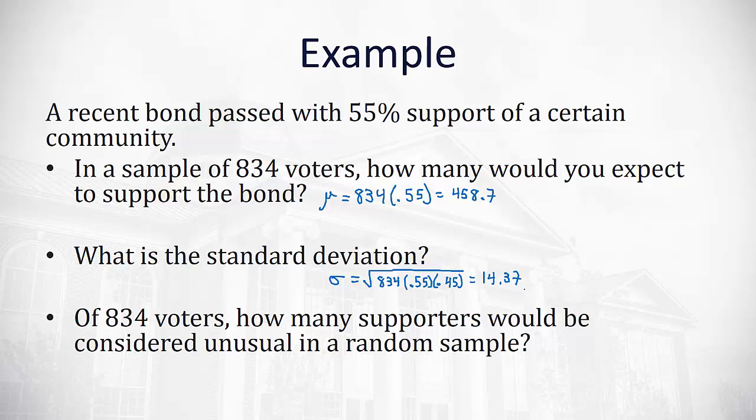So if we want to know how many supporters would be considered unusual in a random sample, what we'll do is add and subtract two standard deviations from the mean. So anything above two standard deviations, so the mean is 458.7, and we're going to add 2.5 standard deviations, 2.5 of these 14.37s.